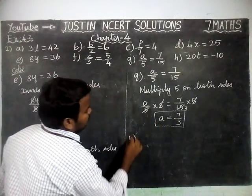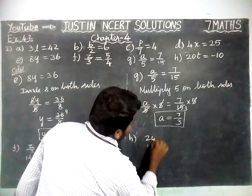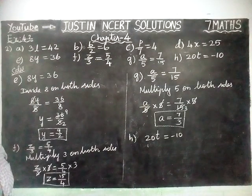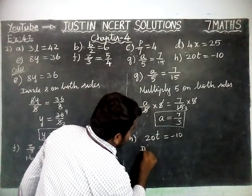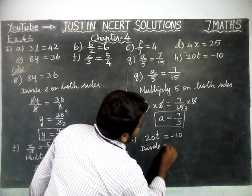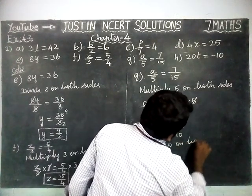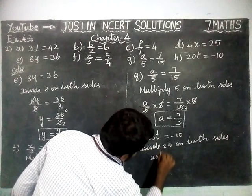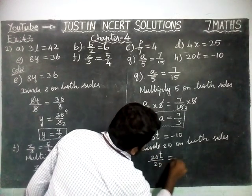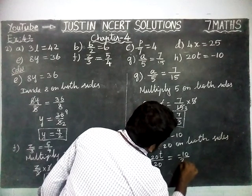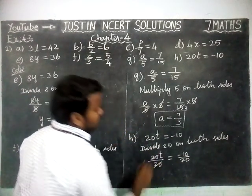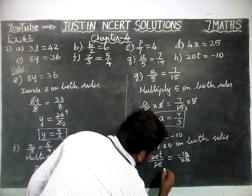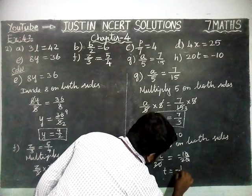Next, last sum, option H. 20T is equal to minus 10. Here, the number is in the multiplication, so we are going to divide. Divide 20 on both sides. 20T divided by 20 is equal to minus 10 divided by 20. The 20s get cancelled. We can simplify: T is equal to minus 1 by 2.